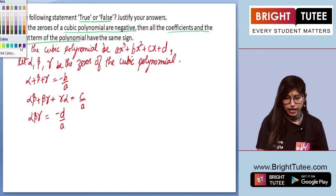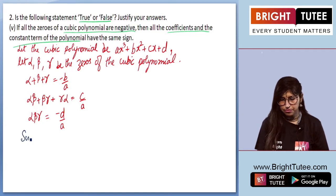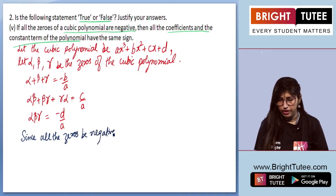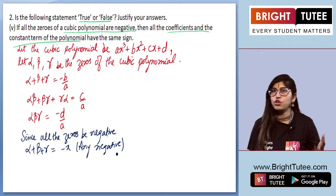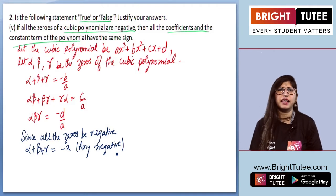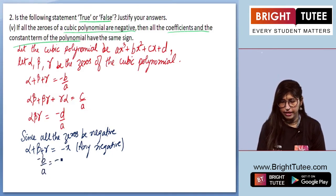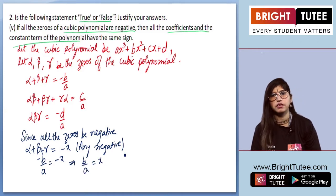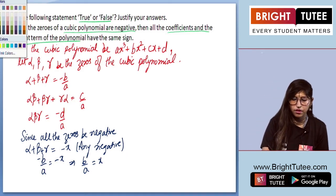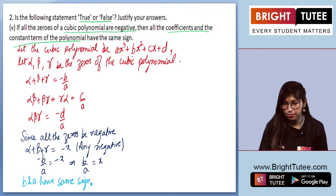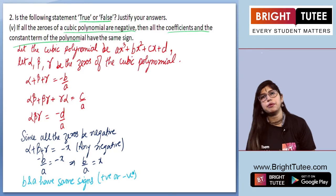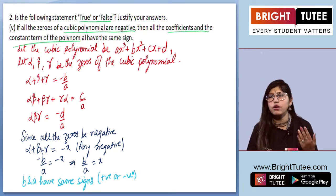Since all the zeros are negative, the sum of the zeros will be a negative number. So we can write the sum as minus x, a negative value. We know that sum equals minus b upon a, so minus b upon a equals minus x, which means b upon a equals x — a positive number. This is possible only if b and a have the same sign, whether both positive or both negative.